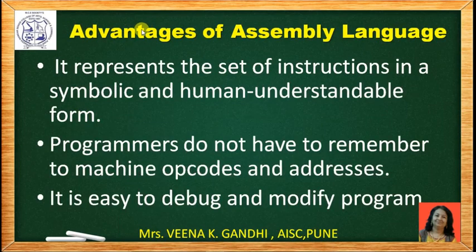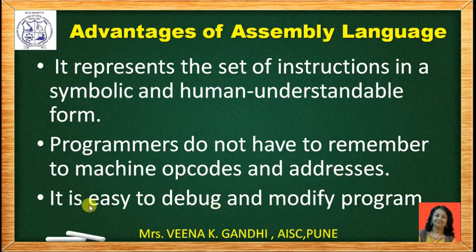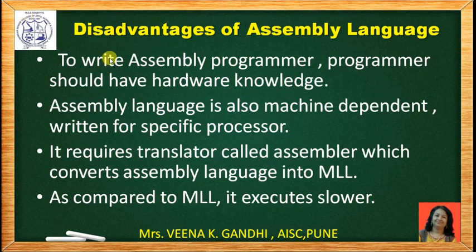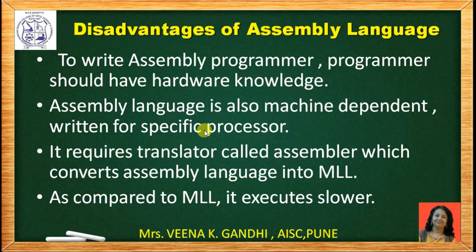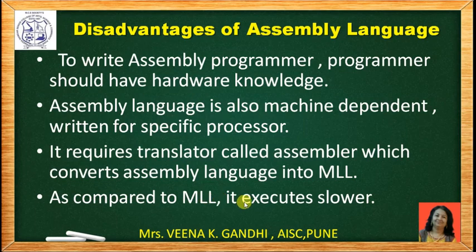Let us see some advantages of assembly language. It represents the set of instructions in symbolic and human-understandable form. Programmers do not have to remember the machine opcodes and addresses. It is very easy to write, debug, and modify the program. Now let us see some limitations of assembly language. To write an assembly program, the programmer should have knowledge of hardware. Assembly language is also machine dependent, written for a specific architecture of a processor like 8085, 8086, etc. It requires a translator called an assembler, which accepts the assembly language program and converts it into machine level code. As compared to machine level language, it executes slower.